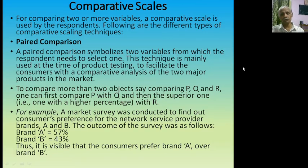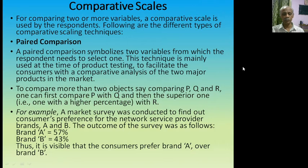Number one is the Paired Comparison. A paired comparison involves two variables from which the respondent needs to select one. This technique is mainly used at the time of product testing to facilitate consumers with a comparative analysis of two major products in the market. For example, a market survey was conducted to find out consumer preferences for network service providers, brand A and brand B. The outcome was brand A 57 percent, brand B 43 percent. Thus it is visible that consumers prefer brand A over brand B.